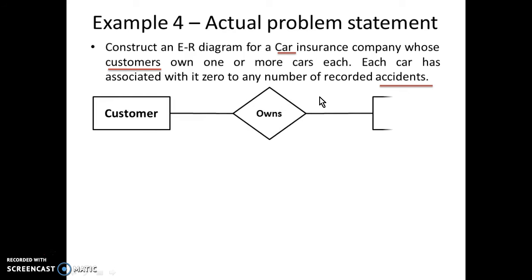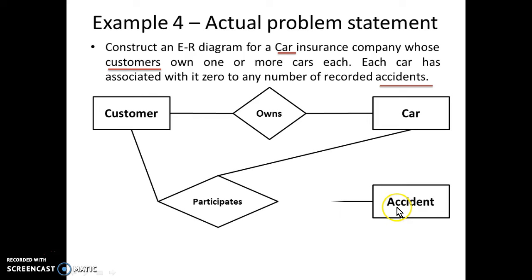So, customer owns car where owns is one kind of verb which represents one kind of relationship. Customer owns car. Accident we make it as entity. And customer and car both participate in an accident. Now, the question arises. Now, the question arises of cardinality.